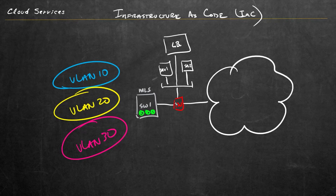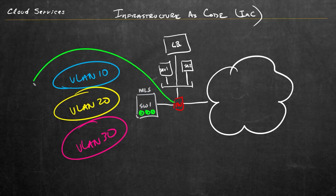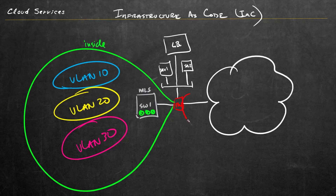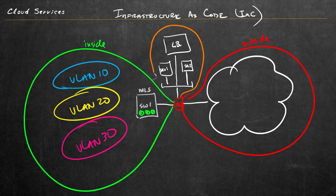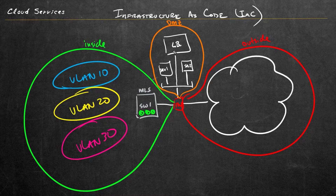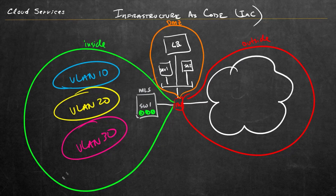From a zone perspective, this could be our inside zone. Interfaces that lead off to the public internet could be called the outside zone. Where our public services are could be the DMZ, the demilitarized zone. We can then set up security policies on the firewall to specify what traffic should be allowed, denied, inspected, or translated.